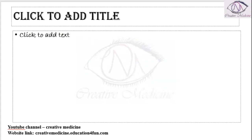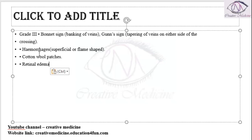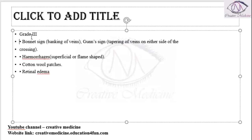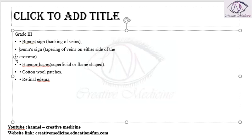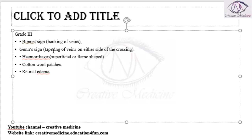In Grade 3, we have two more signs. Number 1 is the Bonnet sign, where there is banking of veins. Number 2 is the Gunn's sign, where there is tapering of veins seen on either side of the crossing.